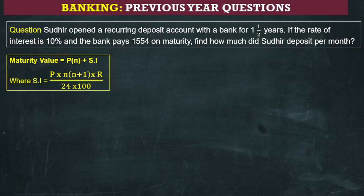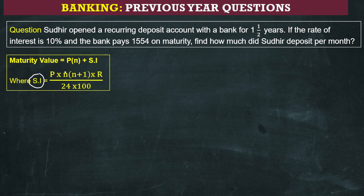Hello students, we are discussing an important problem from the banking chapter. The market value is nothing but the principal plus the simple interest, where N is the number of months. The SI is nothing but principal into N into (N+1) into rate, divided by 24 into 100.